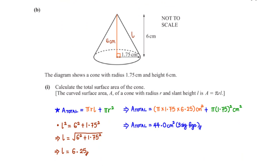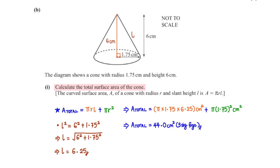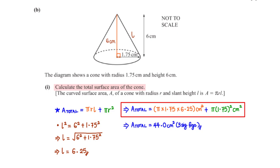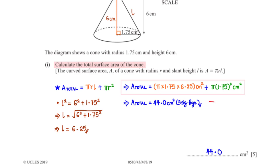The diagram shows a cone with radius 1.75 cm and height 6 cm. Calculate the total surface area of the cone. The total surface area equals πrl (curved surface) plus πr² (base). To find the slant height l, we apply Pythagoras' theorem: l² = 6² + 1.75², giving l = 6.25. Plugging in r = 1.75 and l = 6.25, we get 44.0 cm², rounded to three significant figures.